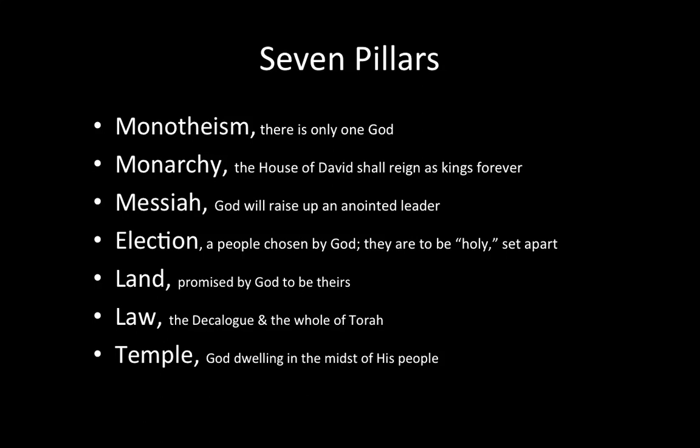The promise is made that there shall be a king coming from the line of David who will rule Israel forever. The Messiah — the third pillar — is that God will raise up an anointed leader. Messiah comes from the Greek, based on the Hebrew Mashiach, which means someone who is anointed, anointed for kingship or a chosen person by God. God will raise up an anointed leader who will deliver Israel.